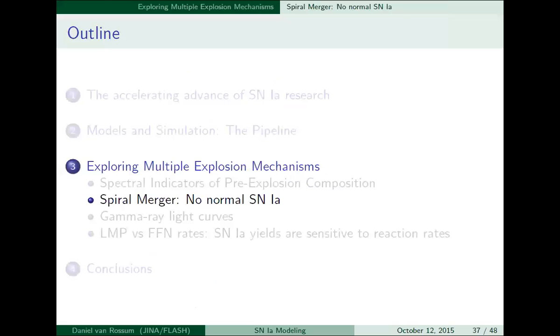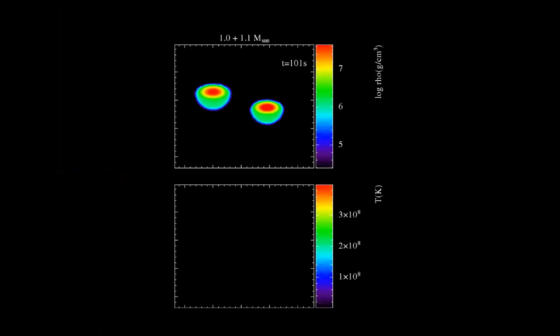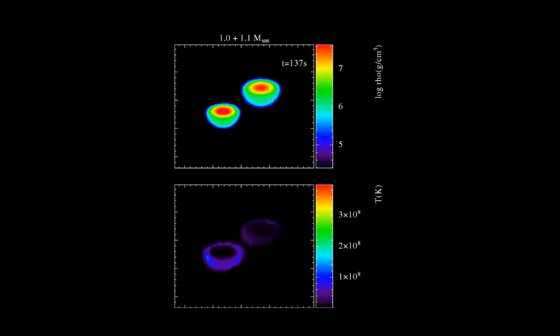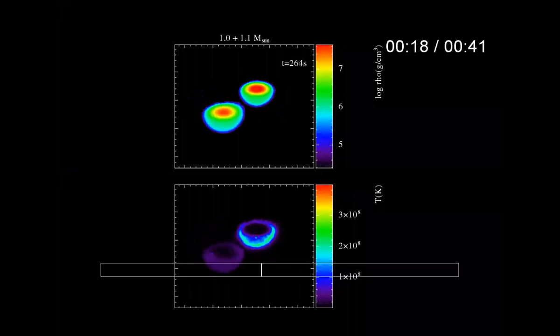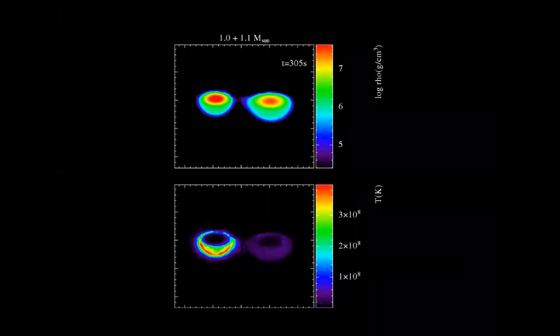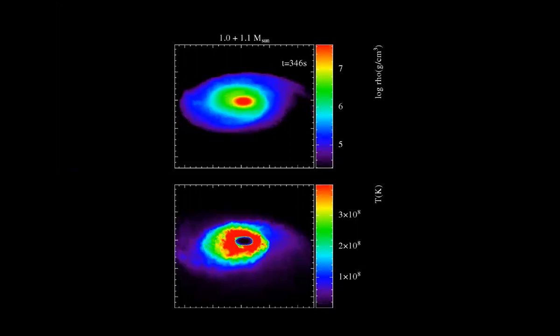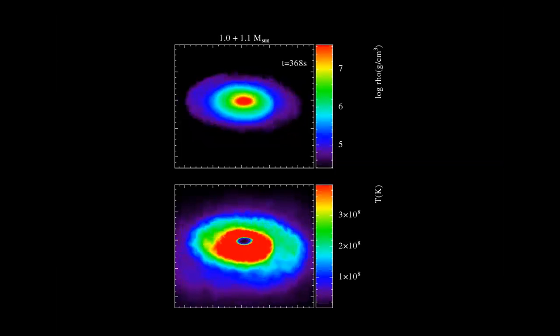Let's look at a different example — I have a movie for this. This is a double degenerate merger simulation. The primary and secondary have masses of 1.0 and 1.1 solar masses. The primary gets heated up by accreting material off the secondary, and the secondary is eventually completely disrupted and accreted onto the primary. At some point we stop the simulation because we think it might detonate, but the detonation cannot be modeled in this SPH simulation because the resolution is not good enough and shocks are involved.